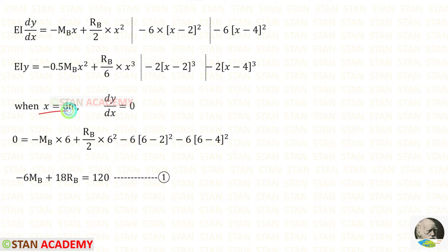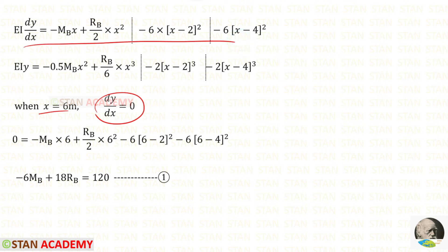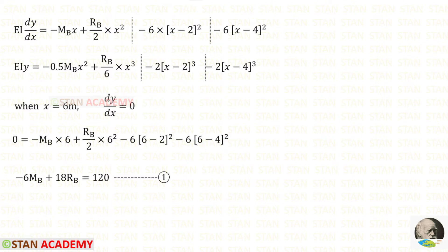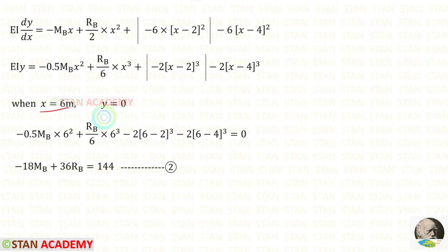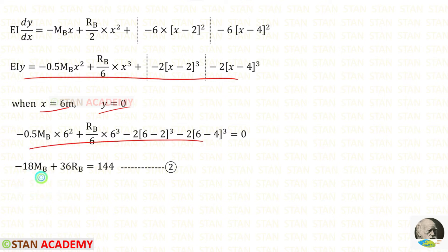We know that when X is 6 meter, dy/dx will be 0. Applying this to the slope equation — since we are considering the full length, we include both Macaulay bracket terms. After simplifying we get equation number 1. We know that when X is 6, y will be 0. Applying this to the deflection equation we get equation number 2.